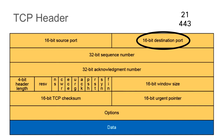If using the File Transfer Protocol, the port number would be 21. Other well-known protocols include Telnet on TCP port 23, SSH on port 22, and SMTP on port 25.